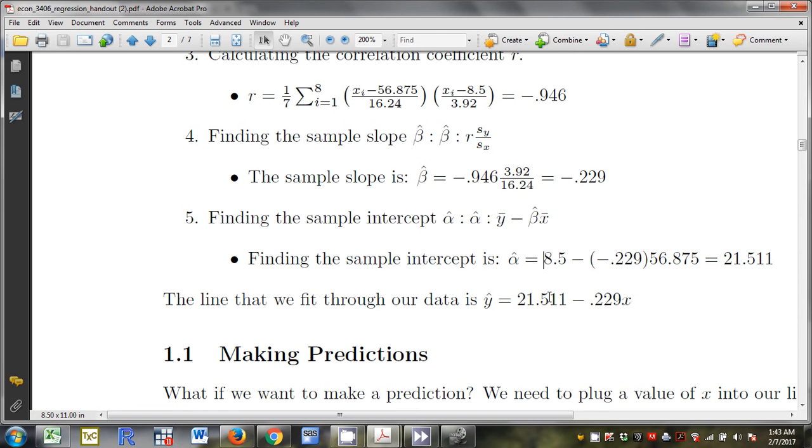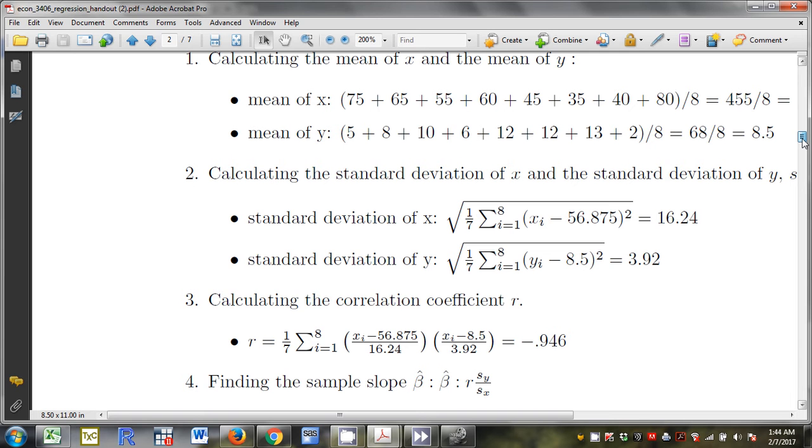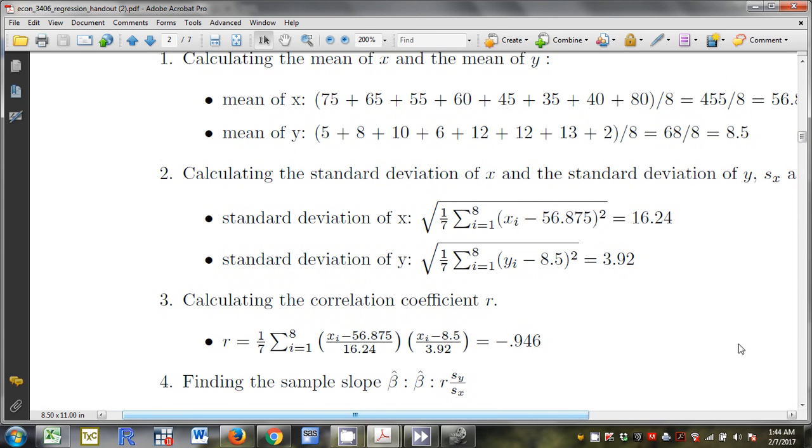So going through the process, the first step, find the means. The second step, find the standard deviations. The third step, correlation coefficient. The fourth step, sample slope. The fifth step, sample intercept. And just to be clear as to what's provided, standard deviation is going to be provided. Correlation coefficient will be provided. Other stuff you need to calculate.